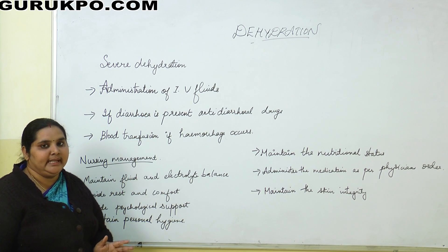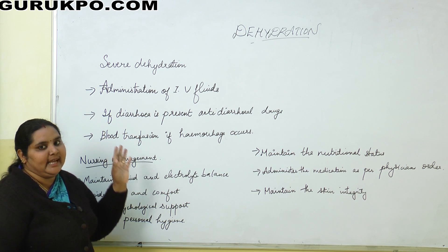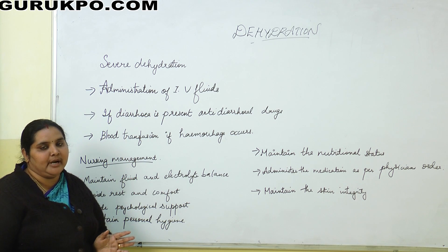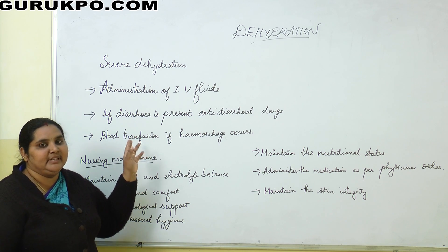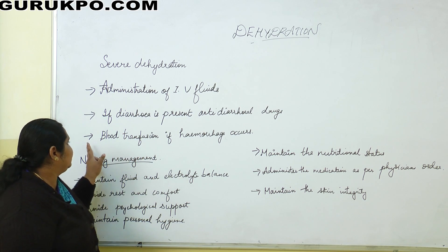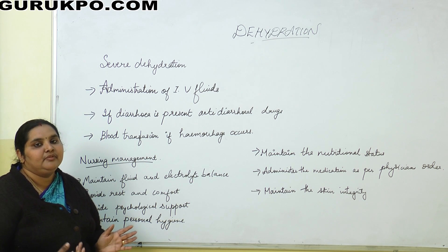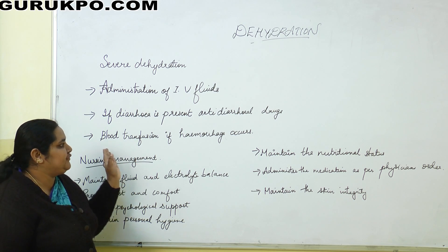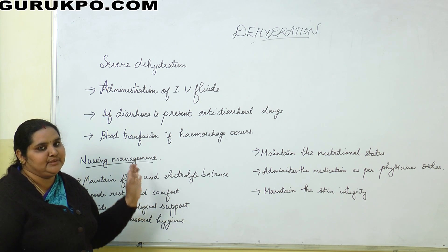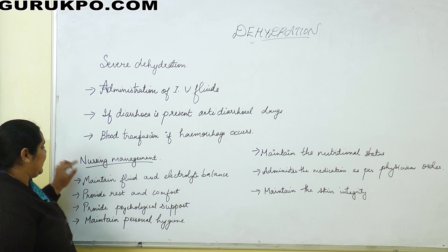For severe dehydration, we administer IV fluids to maintain fluid and electrolyte balance. If diarrhea is present, anti-diarrheal drugs are administered to reduce excessive fluid loss. If hemorrhage occurs, we assess the hemoglobin level, and if it is decreased or hemorrhage is present, blood transfusion is done.